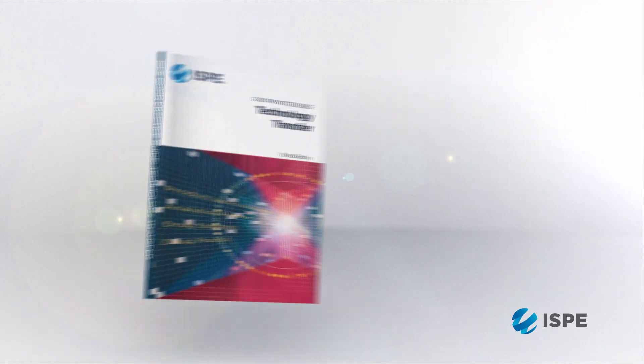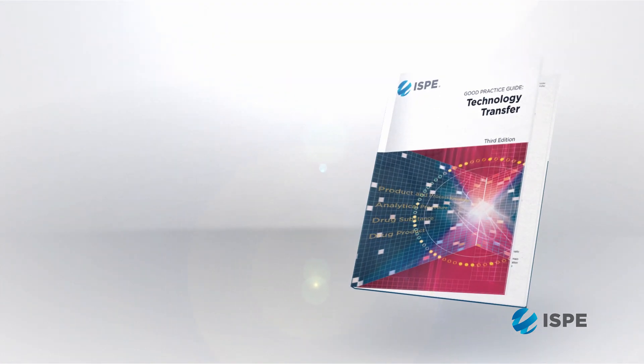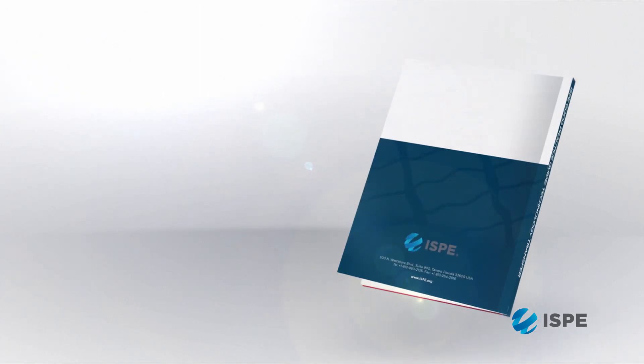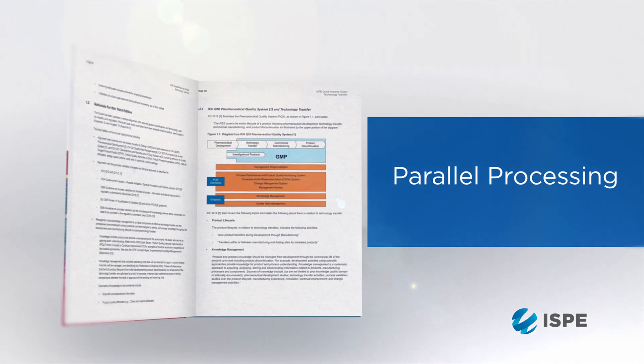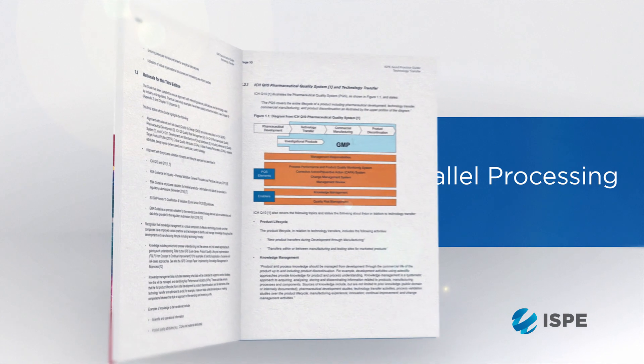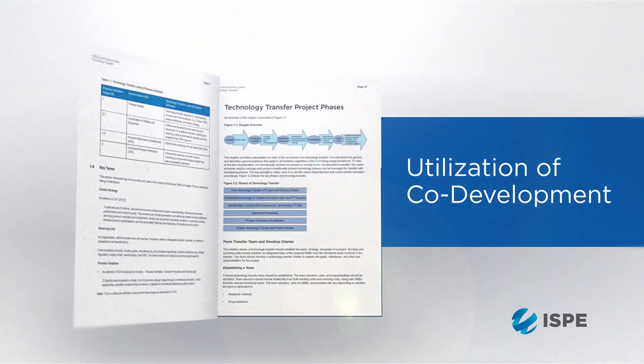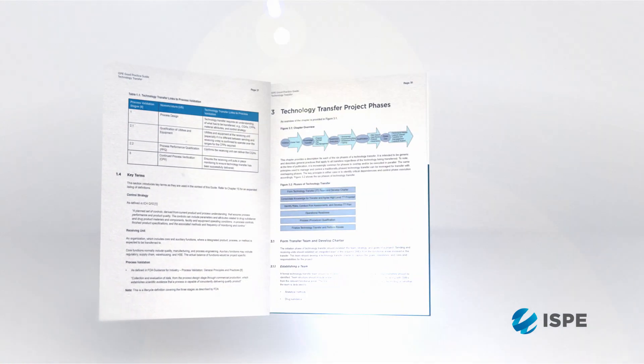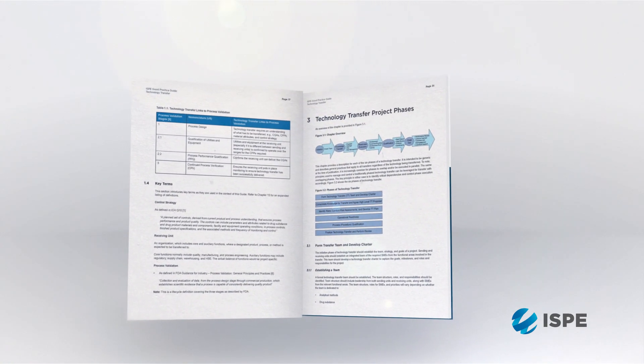The key takeaways from the Good Practice Guide for Technology Transfer is that we've updated the guide with this third edition to include new developments in industry — in particular, the application of parallel processing, running phases of technology transfer in parallel, and also the utilization of co-development between companies, within a company, and between functions.